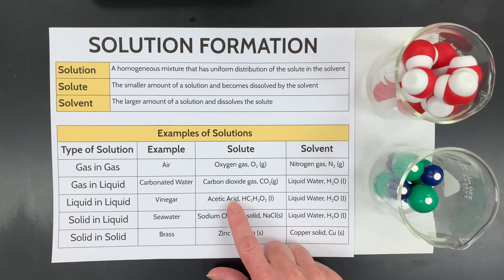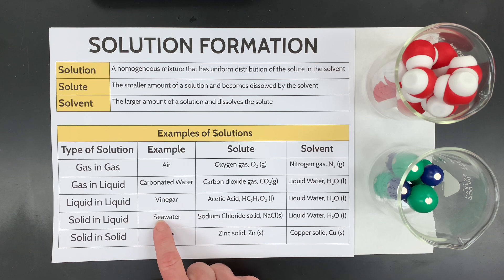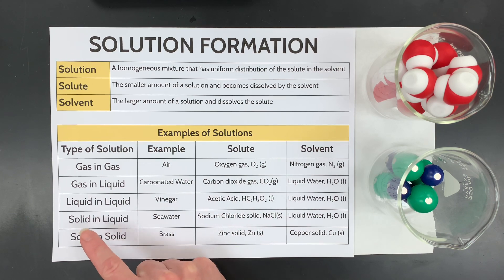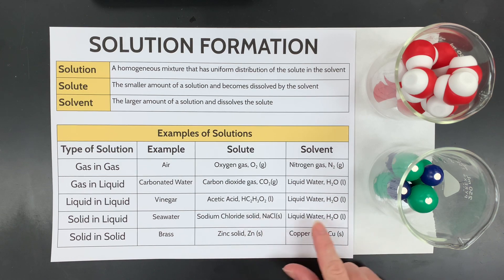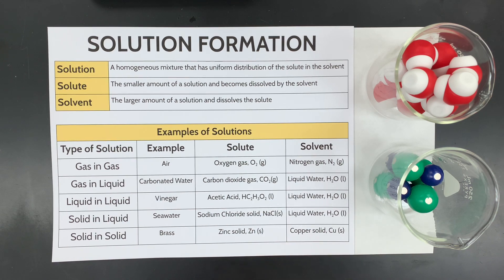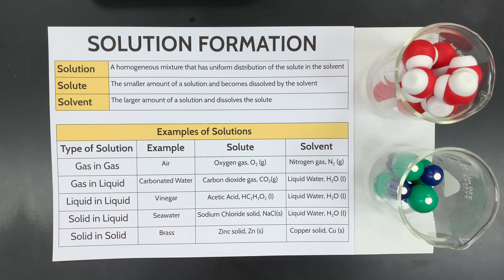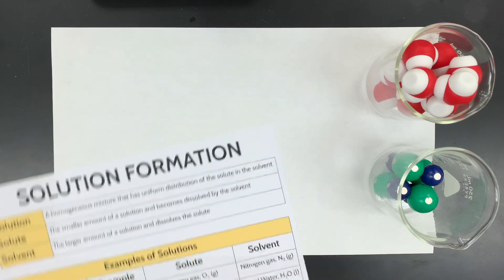Liquid and liquid: something like vinegar that you have in your house, which is acetic acid and water. Seawater is a great example of the most common type of solution everybody thinks about, which is solids and liquids. So that's taking like sodium chloride solid and putting it in water. Last but not least, solids and solids count. So something like brass that's made of a little bit of zinc and mostly copper is also a solution.